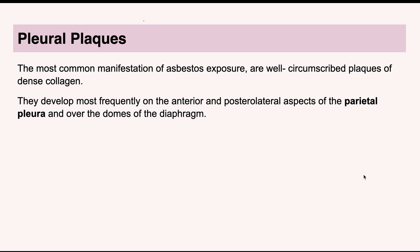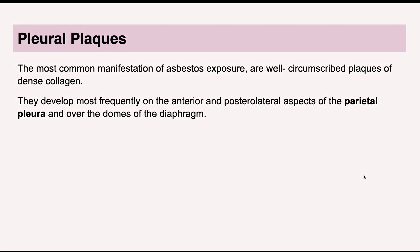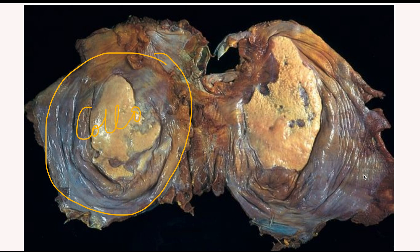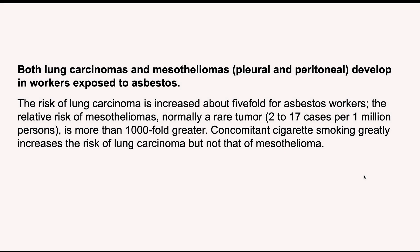Pleural plaques are also caused by asbestos. They are mainly collagen deposited in the pleura. You can see this collagen deposited over the pleura in the image. Pleural plaques are actually very asymptomatic and are not particularly problematic to the person.